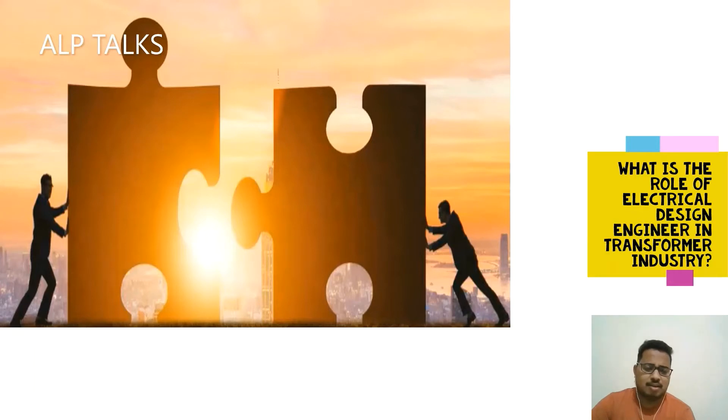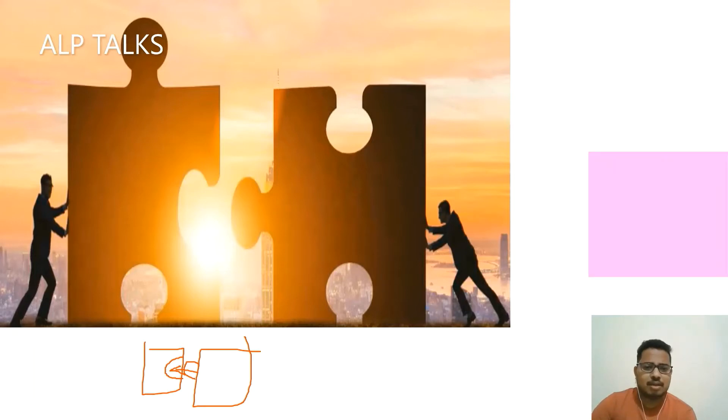For example, here I kept two images. How can you properly fit it? For example, say here you have one small hole, small cutout, you have one more piece. How can we properly fit it? We can fit it in this direction, otherwise here, you can fit in vertical direction.